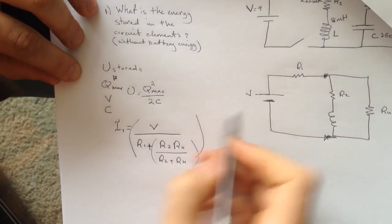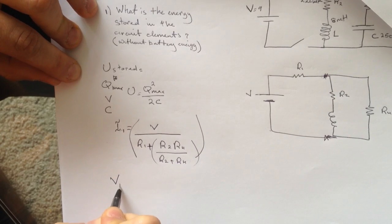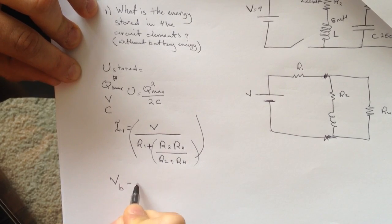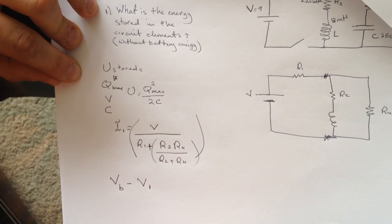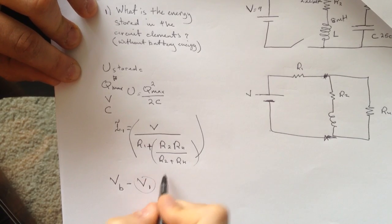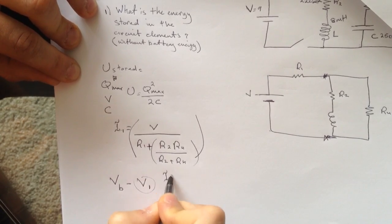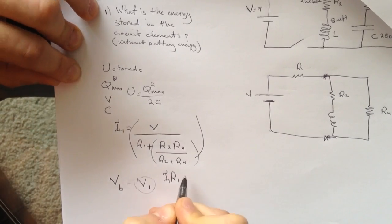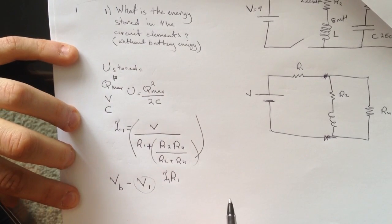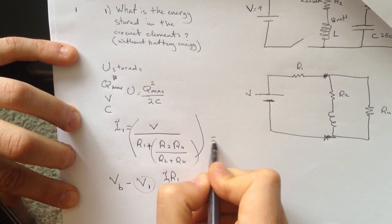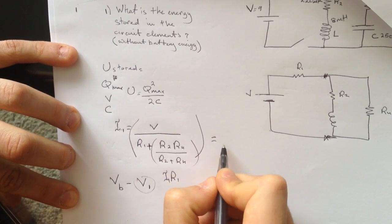So how can we find the voltage that's going from here to here? So the voltage is VB minus V1. Where is V1? V1 is I1 times R1.